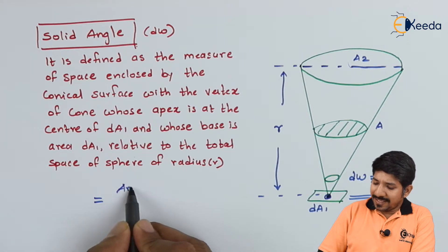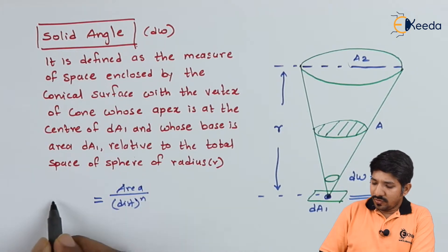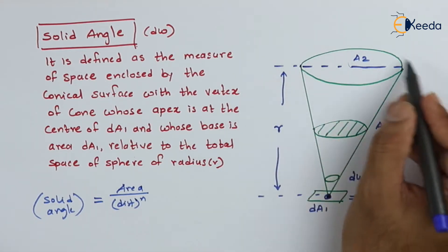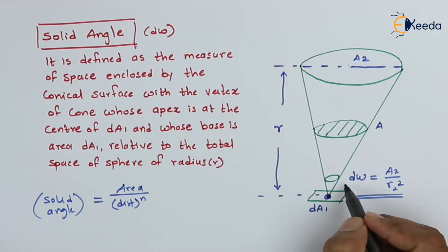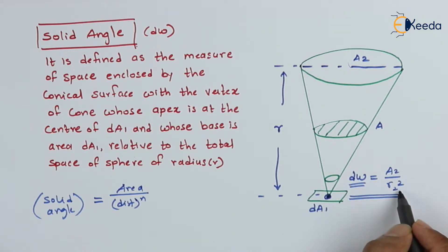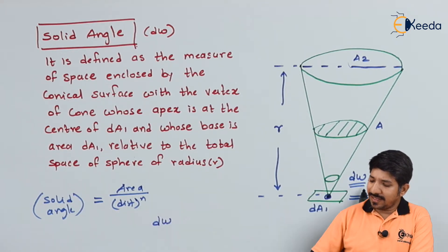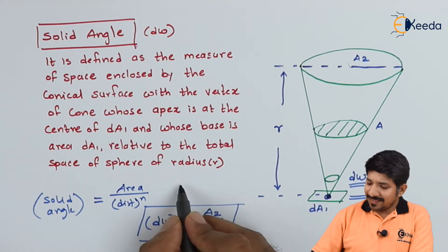The solid angle is given by the area subtended divided by the distance squared. So the solid angle dΩ can be given as A2 divided by r². The small elemental area dA1 will make a solid angle dΩ equal to A2 upon r². The unit for this is the steradian.